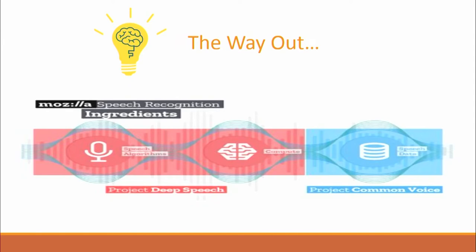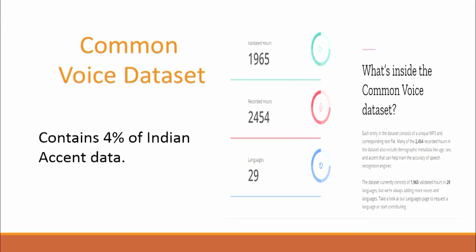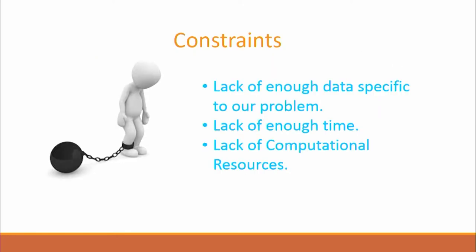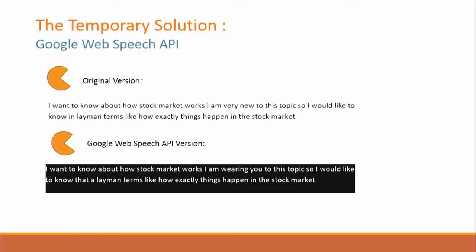The solution we came up with was a collaboration of Project DeepSpeech and Project Common Voice. We applied transfer learning on the pre-trained DeepSpeech model. Transfer learning means: suppose there is a professor who is an expert in a topic — instead of making someone learn from scratch, he gives a brief overview so they build on existing knowledge. Similarly, instead of training models from scratch, we used the pre-trained model. The dataset we used was the Common Voice dataset, which had four percent Indian accent data. We got better accuracy but not the desired accuracy, so we used the Google Web Speech API as a temporary solution, which offered free service for 60 minutes per day.